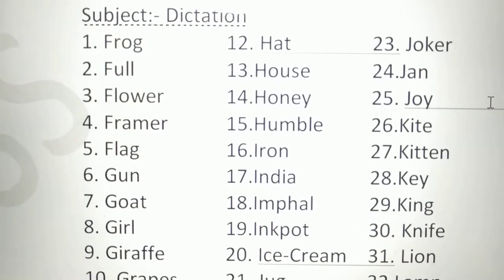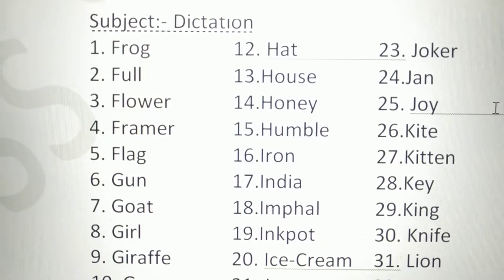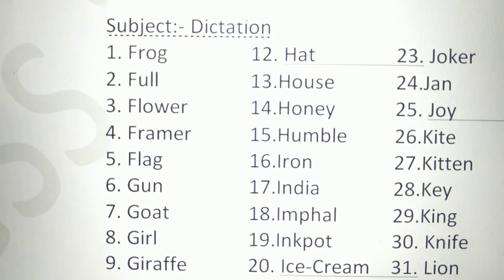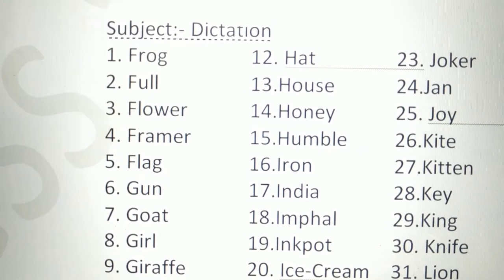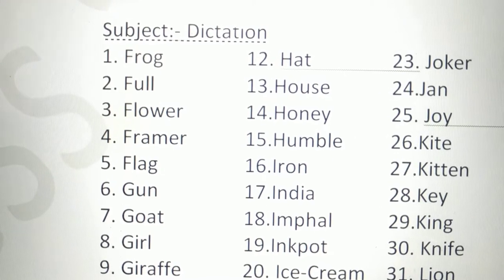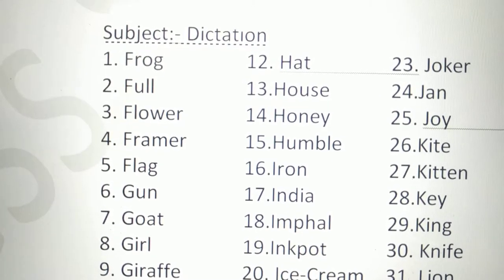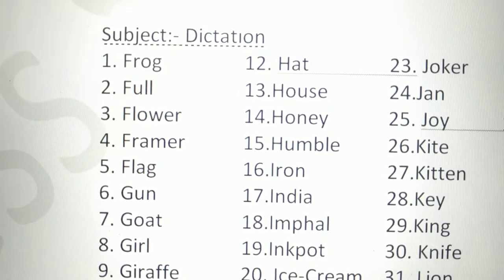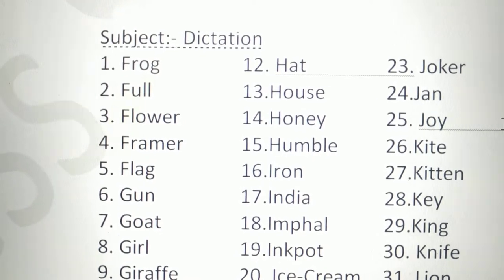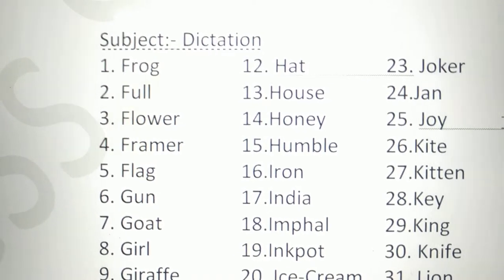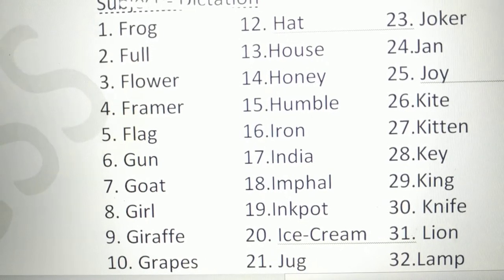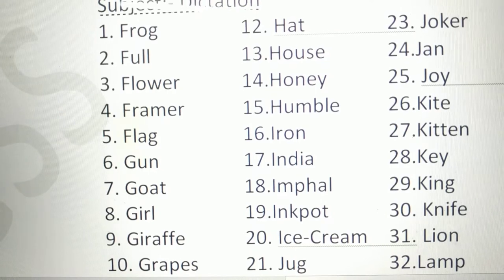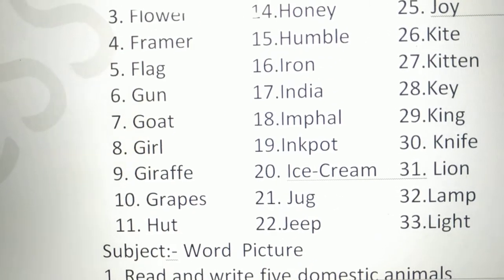Now, subject dictation. Number one, frog. Number two, full. Number three, flower. Number four, farmer. Number five, flag. Number six, gun. Number seven, goat. Number eight, girl. Number nine, giraffe. Number ten, grapes. Number eleven, hut.